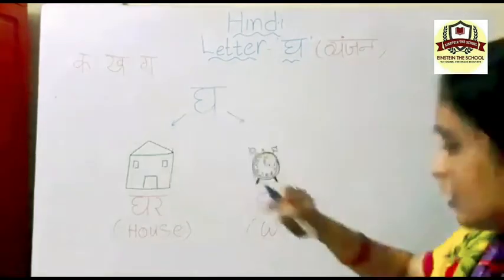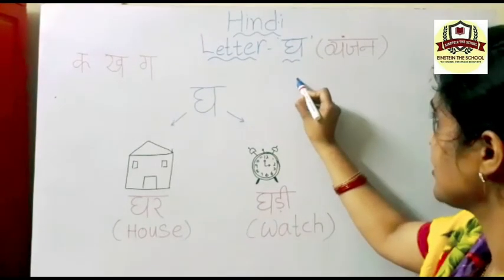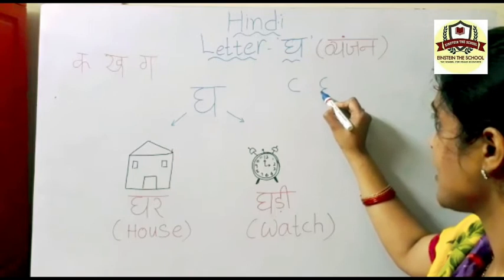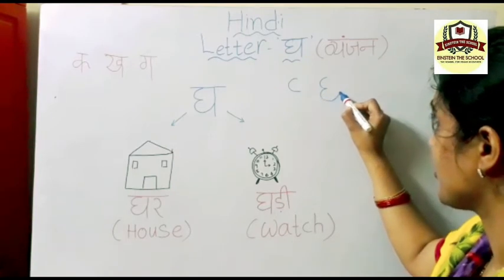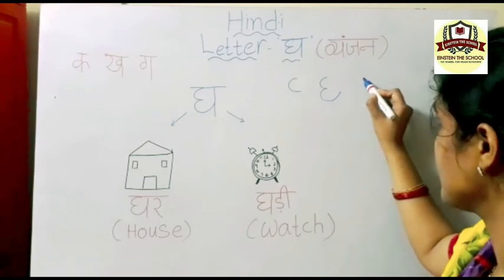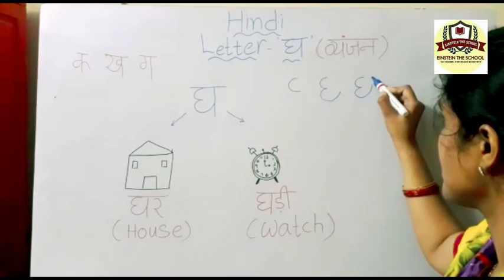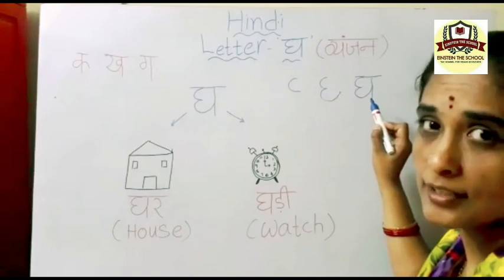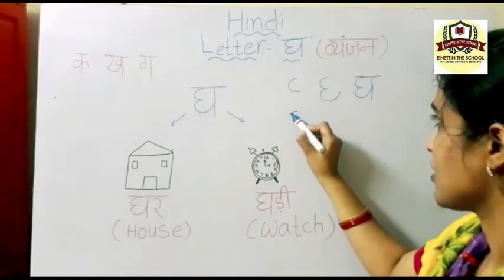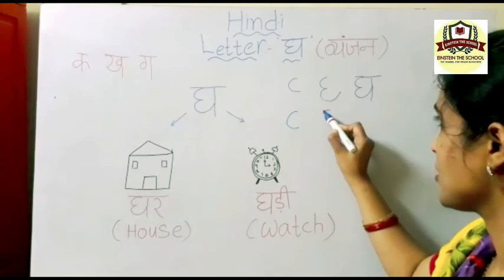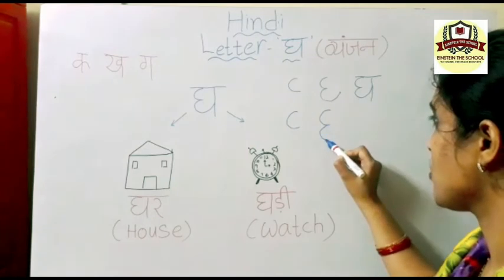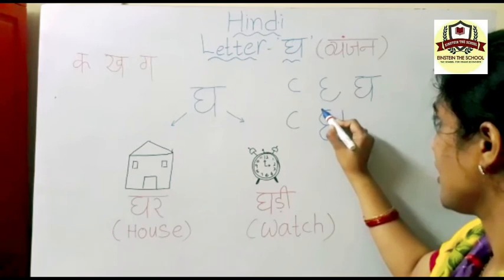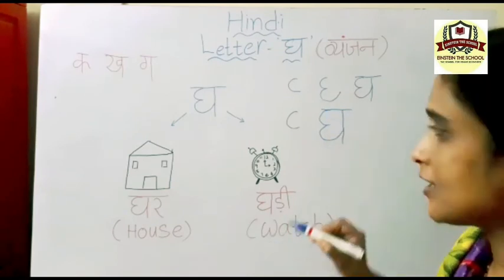Now I will show you how to write the letter Gha. First write a small c, and next again a small c. Go right up to here, and after this a standing line and a sleeping line overhead. This is the letter Gha. Ghaase, Ghar.